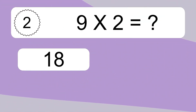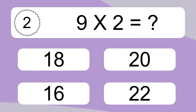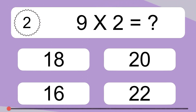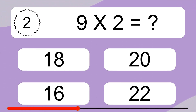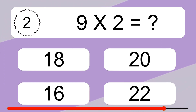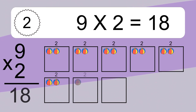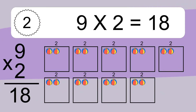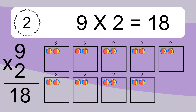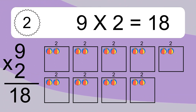9 times 2 equals what? 9 times 2 equals 18. We have 9 boxes, and each box has 2 colorful balls inside. If you count all the balls in all the boxes together, you will have 9 times 2 balls. This equals 18 balls.